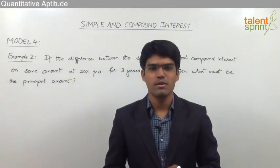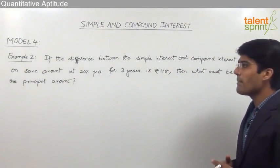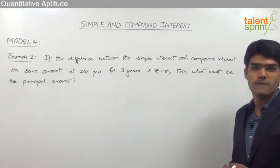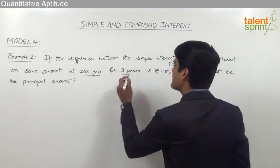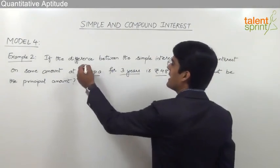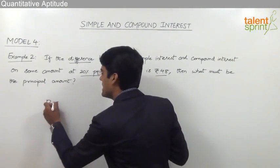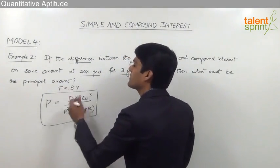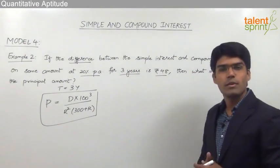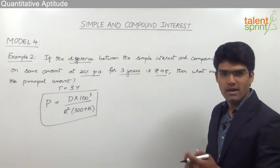Let us now take an example based on the concept of difference for a period of 3 years. The question is: if the difference between simple interest and compound interest on some amount at 20% per annum for 3 years is Rs. 48, then what must be the principal amount? The rate of interest is 20% per annum, time is 3 years, and the difference is Rs. 48. The formula to be used is P equals D into 100 cubed divided by R squared into 300 plus R.